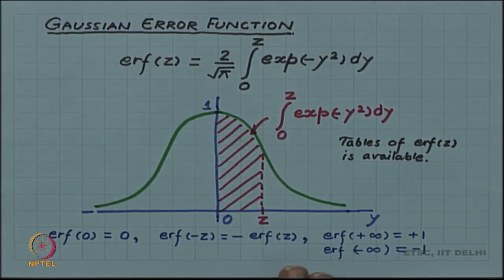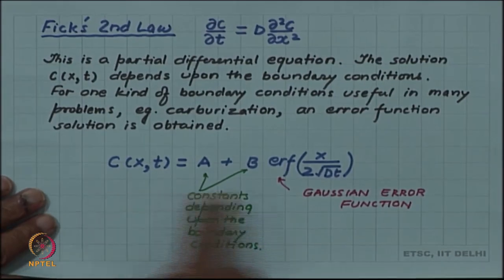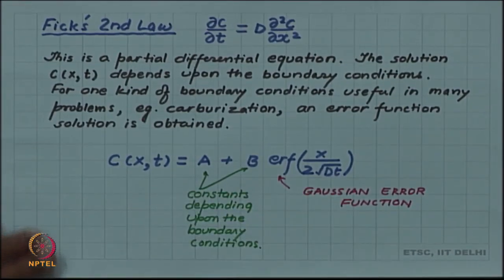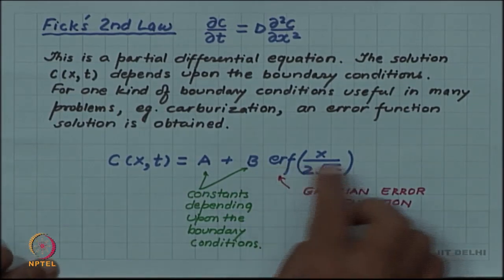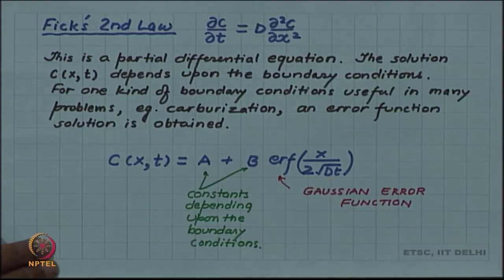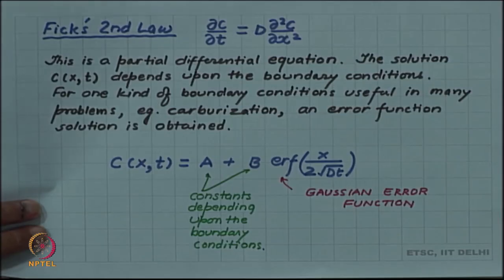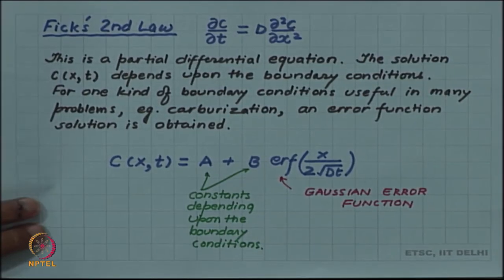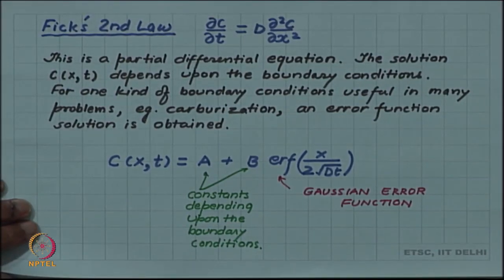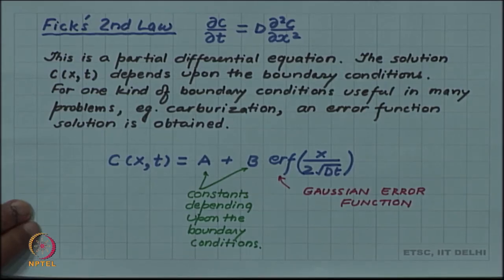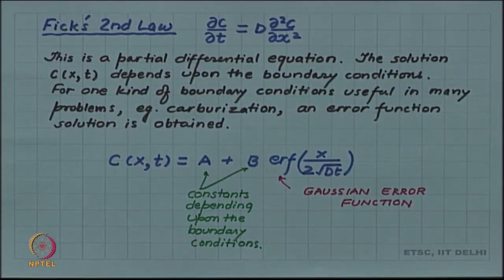This error function appears in the solution c(x, t) = A + B · erf(x / 2√Dt), and the constants A and B have to be determined by specific boundary conditions. We will take up one example of carburization and see how A and B can be determined for a particular specific situation.